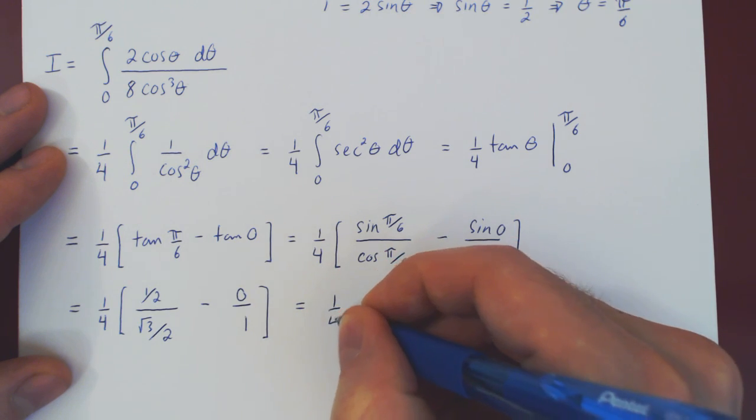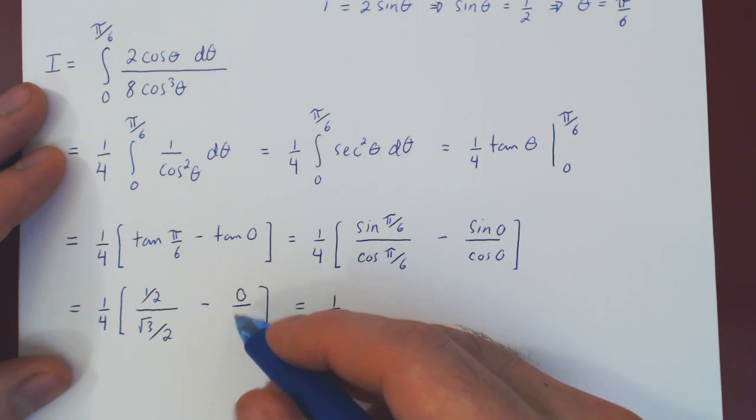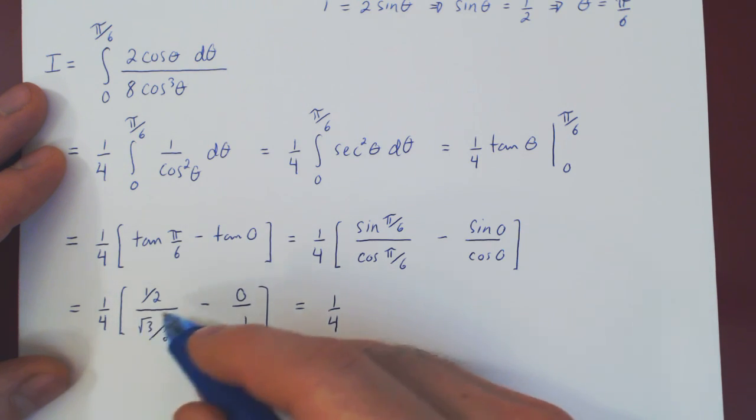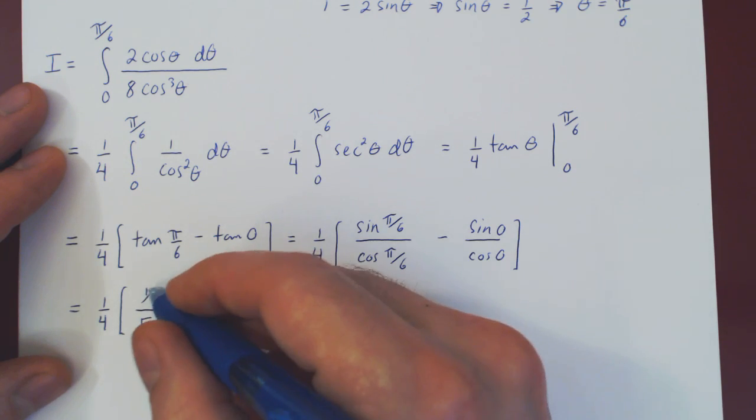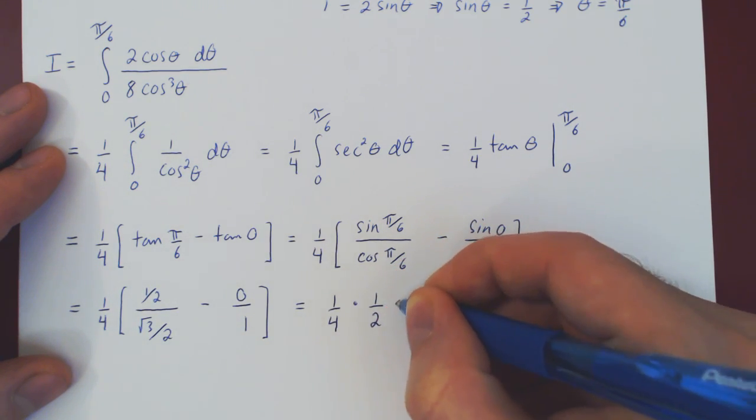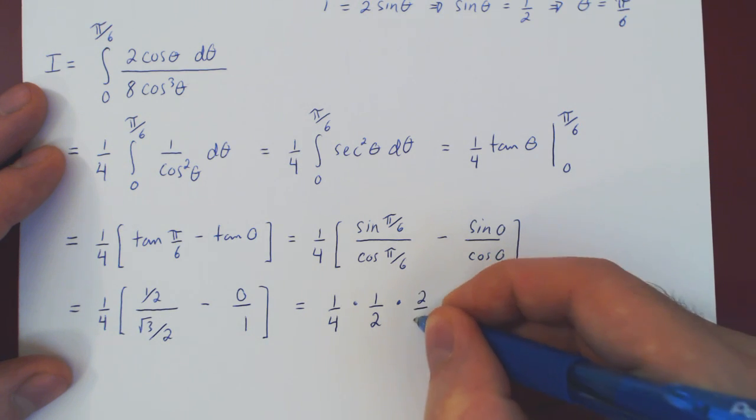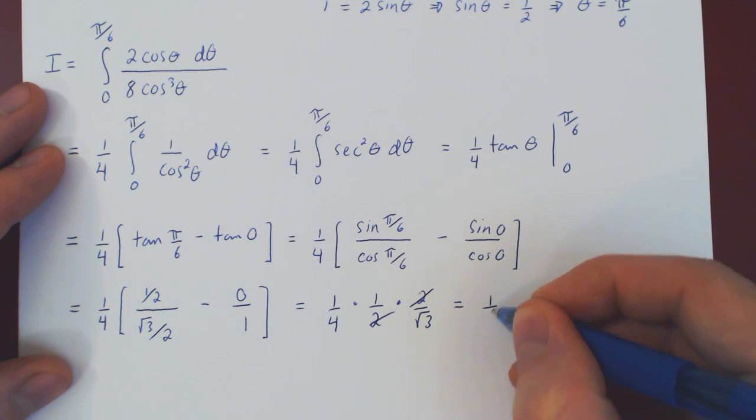And now we're left with a quarter. Now you have 1 half, and of course 0 over 1 is 0, so all we're left with is a quarter times this expression. So a quarter times 1 half times, if you divide by a fraction, you multiply by the reciprocal. So you'll multiply by 2 over root of 3. We can cancel 2 over 2, which we now have 1 over 4 times 1 over root of 3.